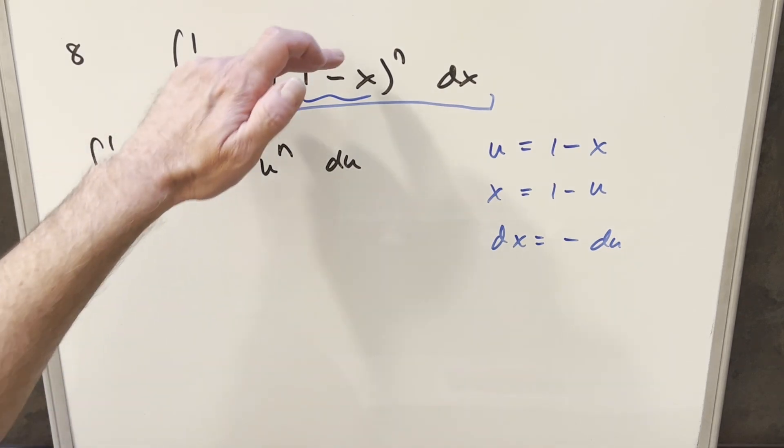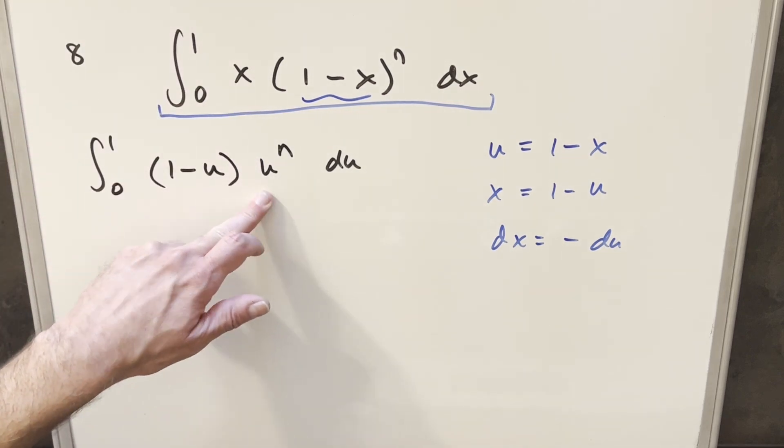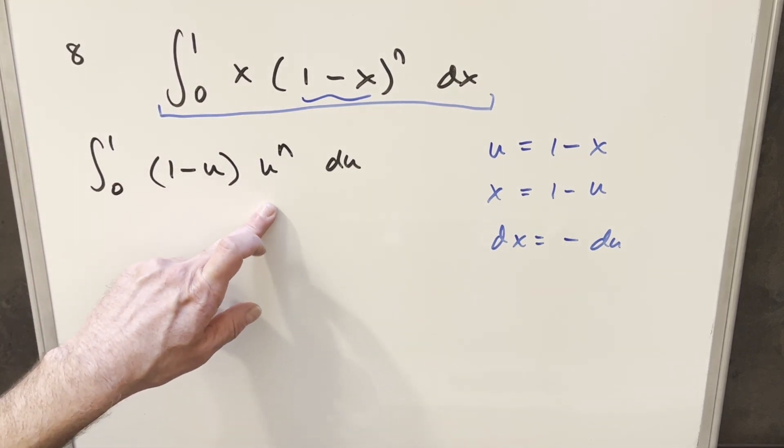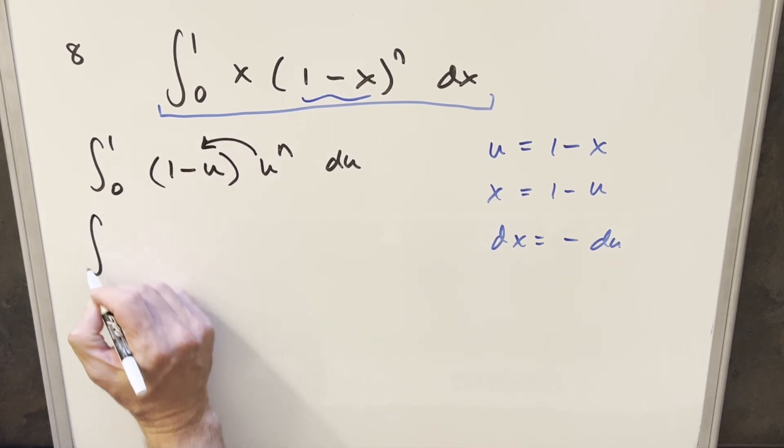And now at this point, this is pretty nice because we actually kind of simplified this and brought the exponent over here. Different variable, of course, but that doesn't bother us.